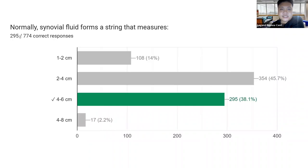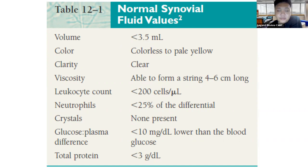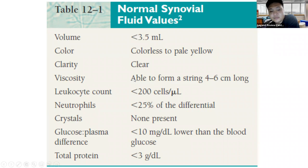Next: Normal cervical mucus forms a string — the spinnbarkeit test. Many students got this wrong: about 45-46% answered 2 to 4 cm. The correct answer is 4 to 6 centimeters. Please memorize the normal values for all body fluids — they are tabulated in Strassinger. Copy those tables onto flashcards as early as possible, so by review time you just need to repeat them. For cervical fluid, normal viscosity is represented by the ability to form a string 4 to 6 cm long, and the normal volume is less than 3.5 mL.